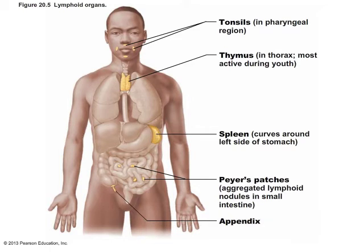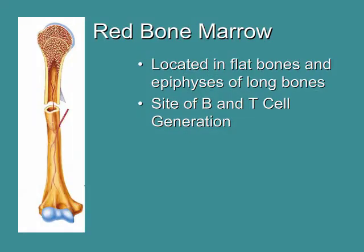One organ we should discuss is the red bone marrow, located within the epiphyses of the long bones. This is the site of blood cell production, as well as our B and T cells — our lymphocytes. You might say, wait — bone doesn't have any lymphatic vessels, and that's true, so it's not a true lymphatic organ. But it is a site where lymphocytes are produced, and it is the site where B lymphocytes will undergo the process of immunocompetence. It's important to realize that red bone marrow is still important for the lymphatic system, even though it's not technically part of it.